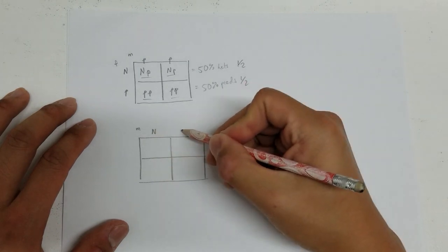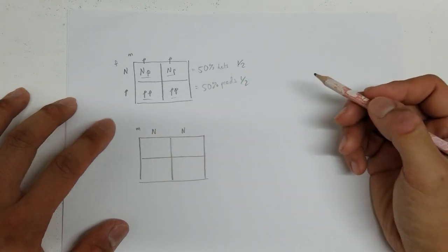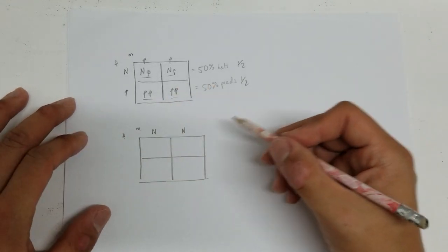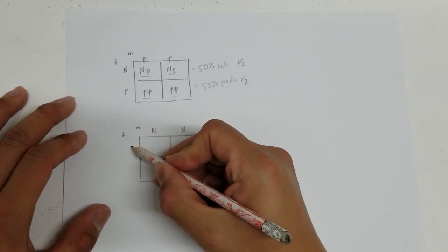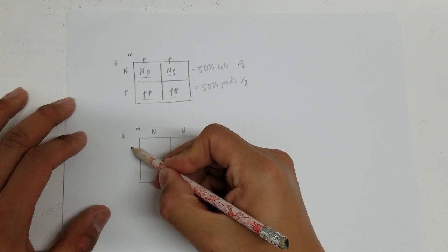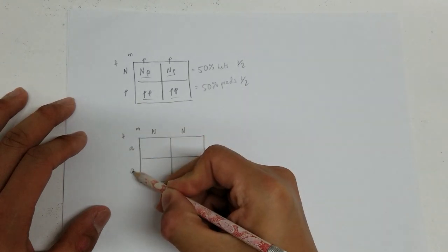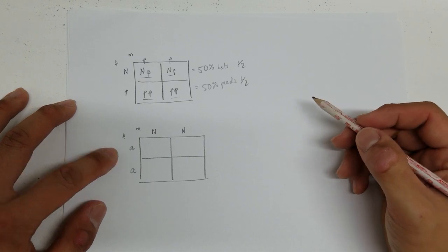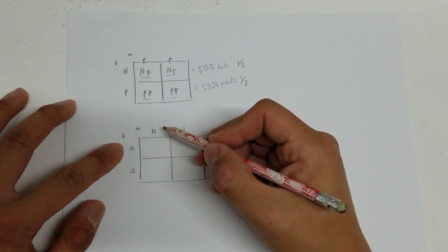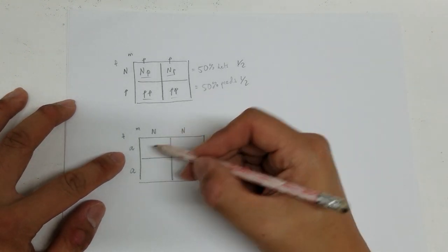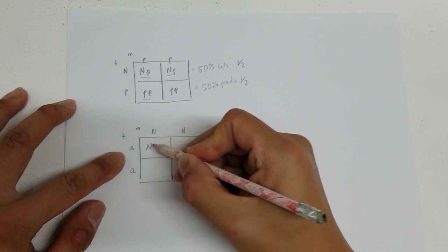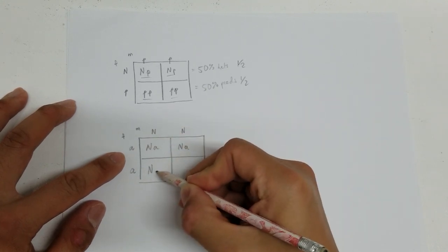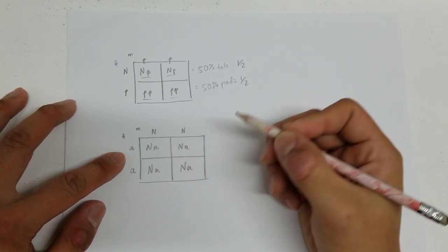And then the female will be listed on the side. Now, she is a xanthic, and xanthic is recessive, so we know she has to have two copies of the xanthic gene, which I'll denote by the lowercase a's. And then again, just carrying the letters from the top and left into the cells, we have N-A, N-A, N-A, and lastly, N-A.